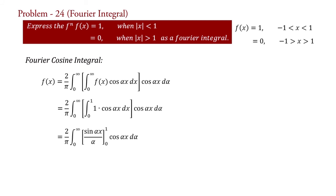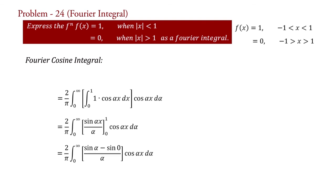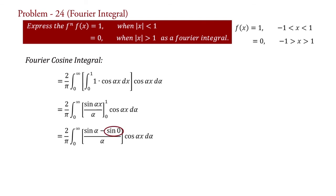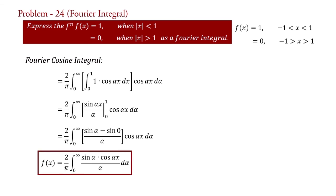Substituting the limits, f(x) = (2/π) ∫₀^∞ [sin(α) − sin(0)] / α · cos(αx) dα. Since sin(0) = 0, therefore f(x) = (2/π) ∫₀^∞ sin(α)cos(αx) / α dα. This is the Fourier integral of the given function.